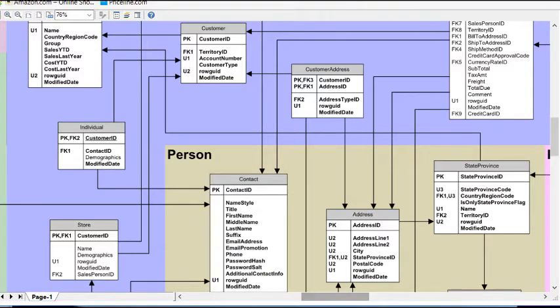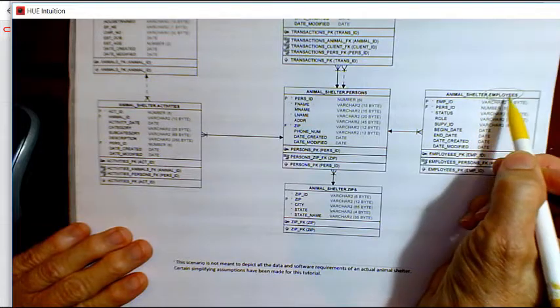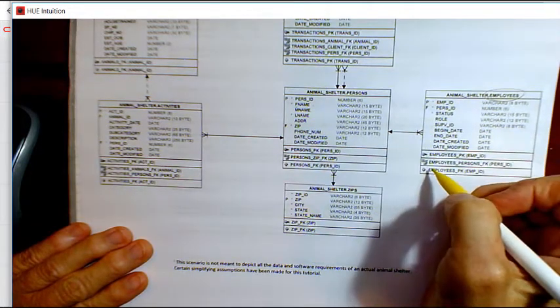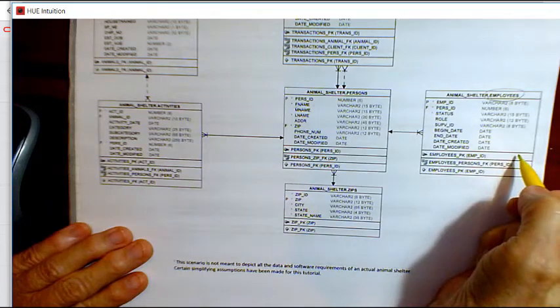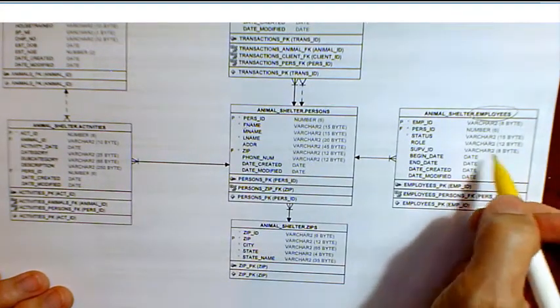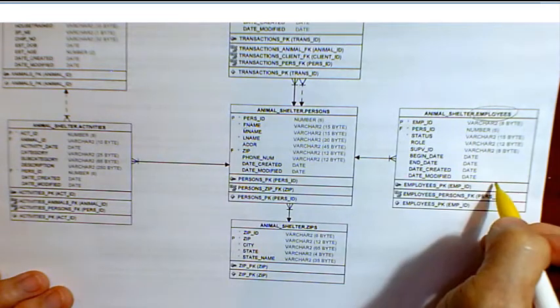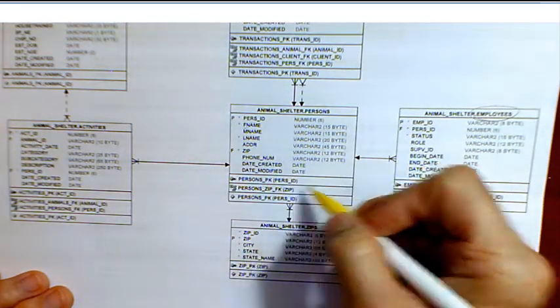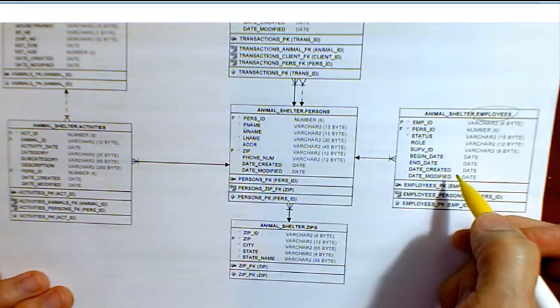We see in this data model, which has evolved over time, that we're now tracking person attributes separate from things specific to our employees. We do have a separate employees table simply because that gives us a place to put data specific to employees, and we can control access to this data much easier than if we put everything into a single table called persons.